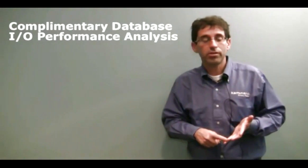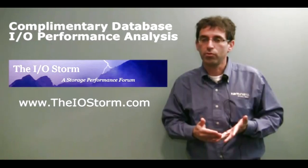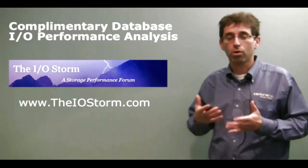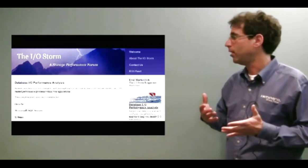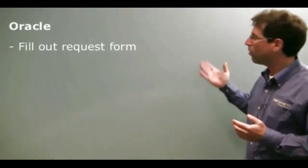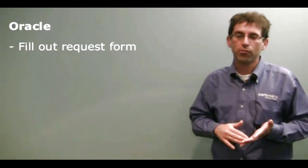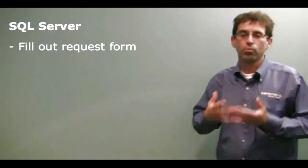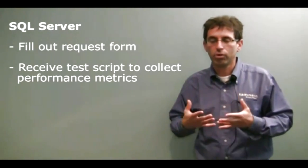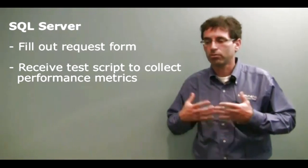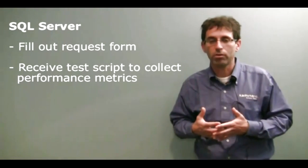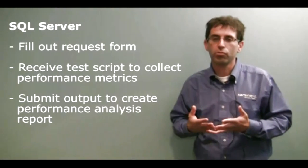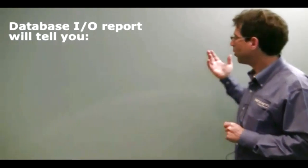In Camino, we offer a complimentary service to do the performance analysis for you. It's very simple — all you have to do is go to iostorm.com, our performance portal, and select the performance analysis link. In Oracle, once you fill out the form, you will email us the AWR report. In SQL, once you complete the form, you will receive from me a script to run against your production database to collect all the metrics needed to complete the report, and then you submit the output of that script.